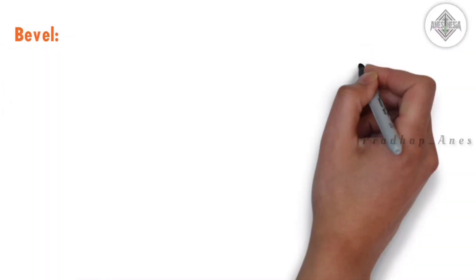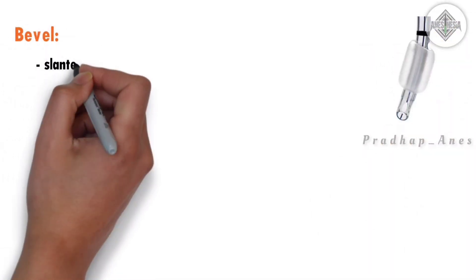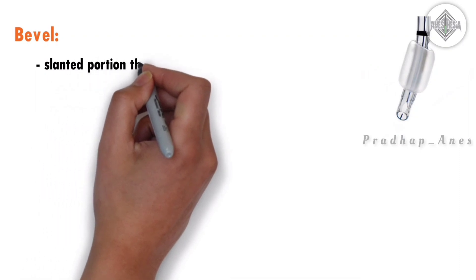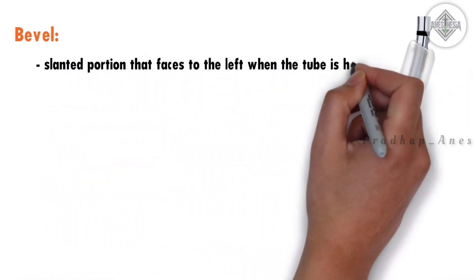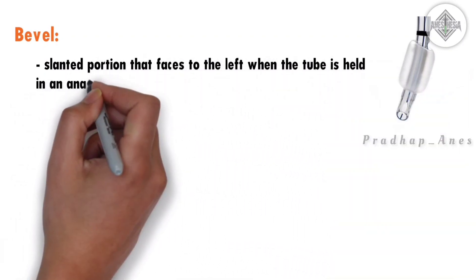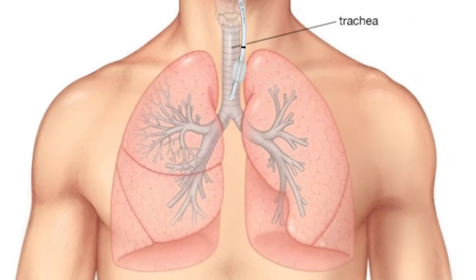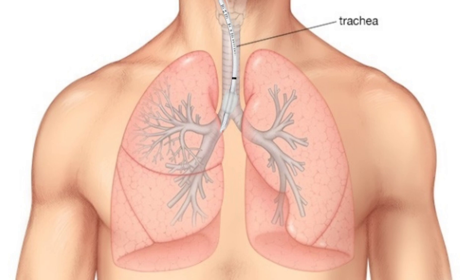Bevel. The bevel is a slanted portion that faces to the left when the tube is held in an anatomical position. This is because the tube has an easy chance to be introduced to the right side of the bronchus due to its position. If that happens, only one side of the lung will be ventilated. This is why the bevel is faced to the left side.